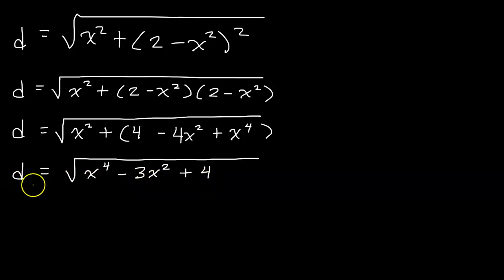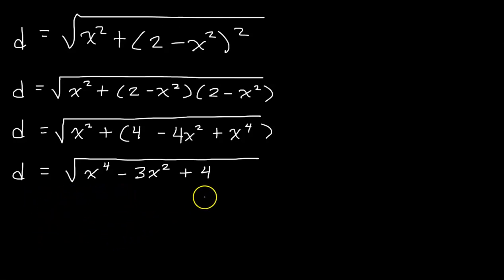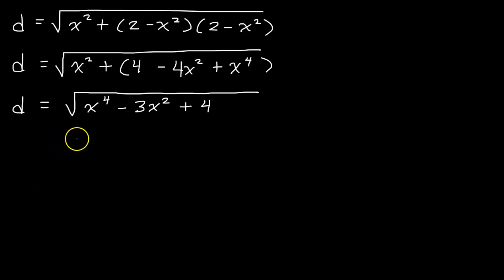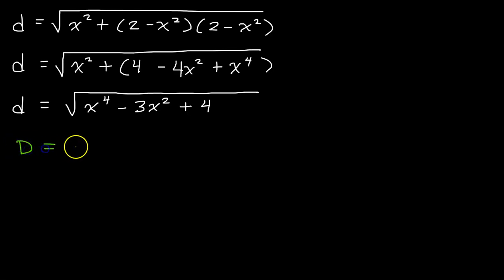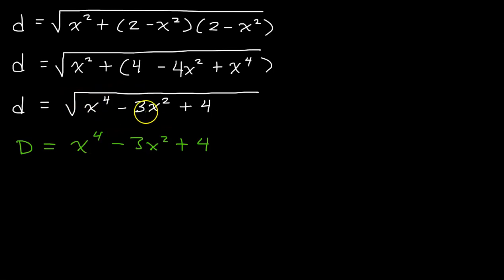Remember, this is the equation for the distance between those two points, and we want to find the smallest distance possible. We know how to find the extrema of a function using the first derivative test. Let's make our calculations a lot easier with a shortcut: this overall expression for distance will be smallest when the expression under the radical is smallest. So let's just minimize x to the 4th power minus 3x squared plus 4. If we find the value of x that makes this the smallest, it will automatically make the overall distance the smallest — but without the square root, our calculations will be much easier.